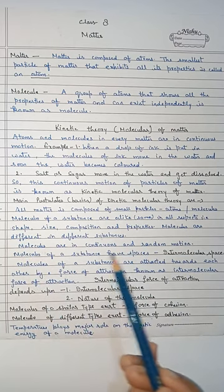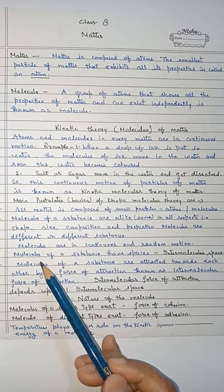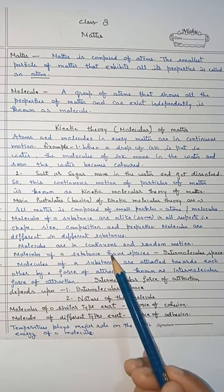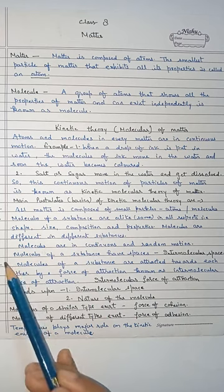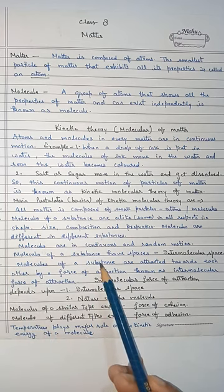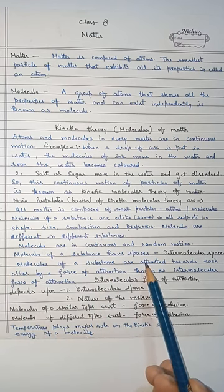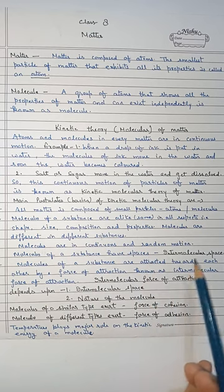Next, molecules are in continuous and random motion. Just now, I explained that molecules of any substance are always in continuous and random motion. Next, molecules of a substance have space and that is called intermolecular space.